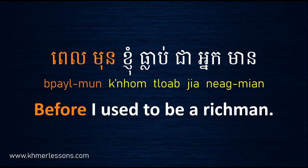Before I used to be a rich man — so the opposite, now I'm poor. In Khmer you say: Pêl Môn Knhom Thlòp Chìa Nẹ Meen. 'Nẹ Meen' means a rich man. If you break the word, 'Kro' means poor and 'Meen' means rich. When you say rich man or poor man, you use 'Nẹ' before that word. That's all for using 'before' for something that happened in the past already.